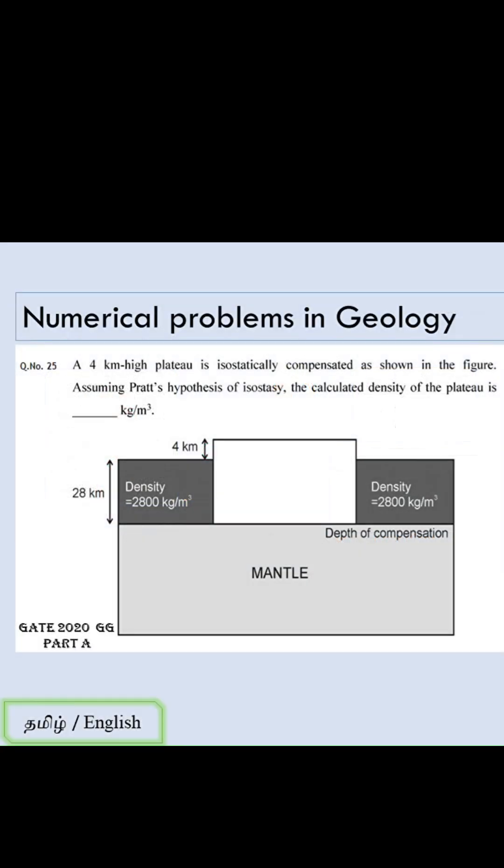A 4 km high plateau is isostatically compensated as shown in the figure. Assuming Pratt's hypothesis of isostasy, calculate the density of the plateau in kg per meter cube.